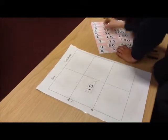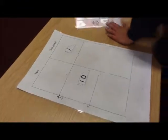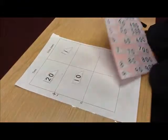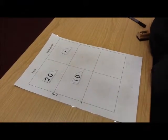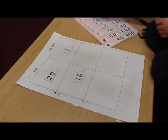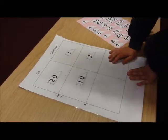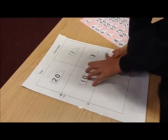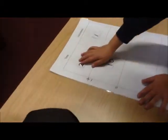And that goes in the tens there. After we've done that, we find out the answer. And if we add the top ones to the bottom ones, that would make 30.